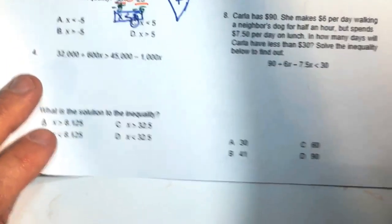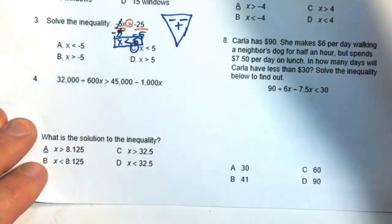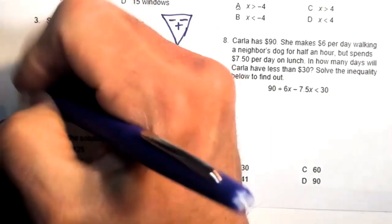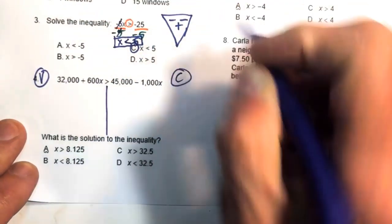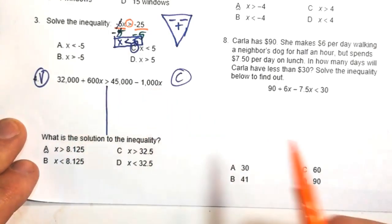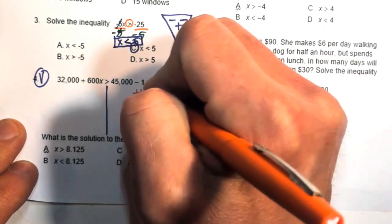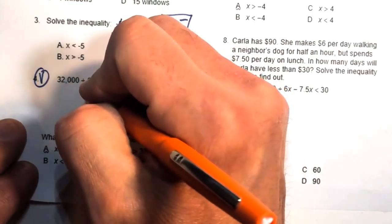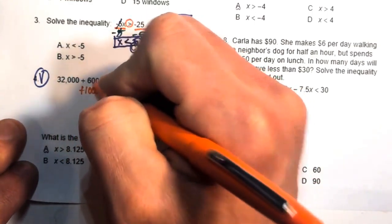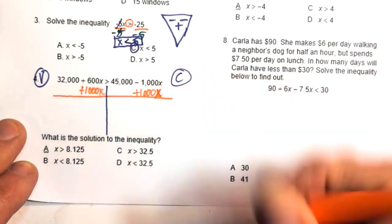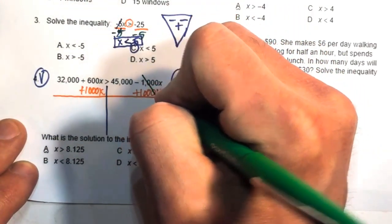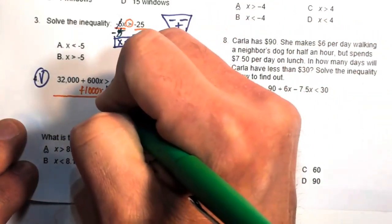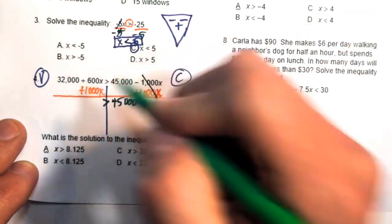Number four has bigger numbers but is still an inequality. We'll move variables to the left side because I have a negative 1000x — moving it over makes it positive. Stack like terms so the x terms line up for easier addition. Cancel the negative 1000x plus 1000x, giving 0. Zero plus 45,000 equals 45,000. Bring down the inequality sign; 600 plus 1000 gives 1600x.